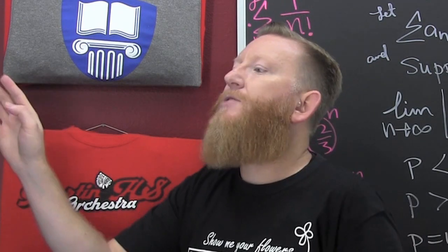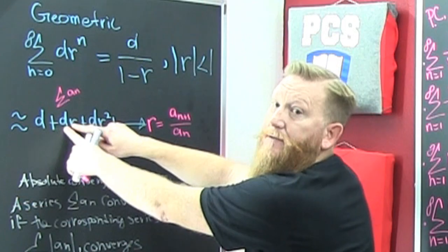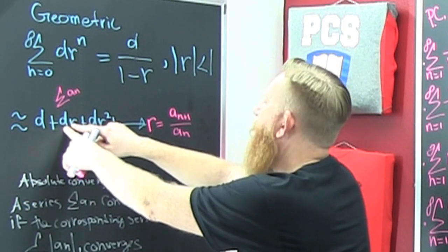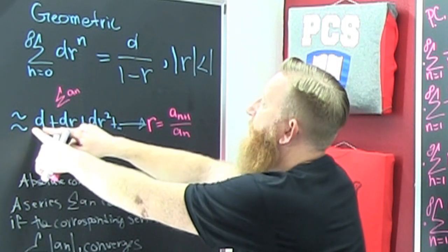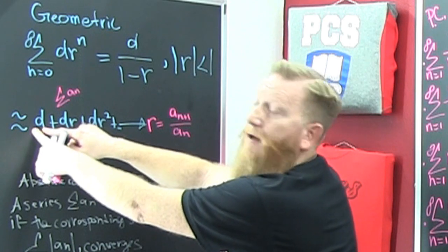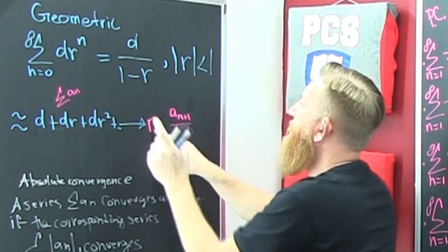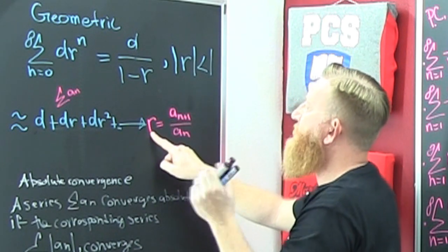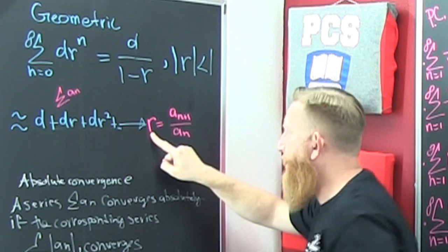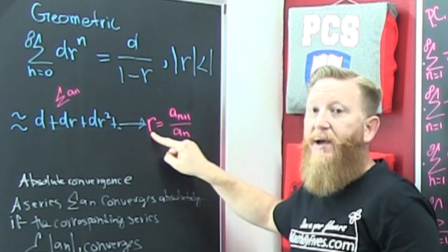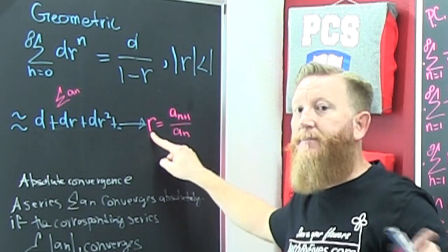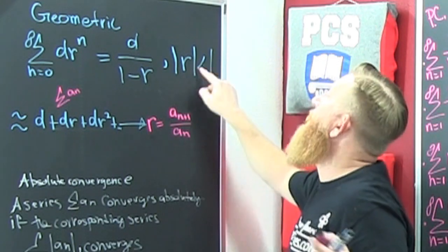Or you look at the term that you're at divided by the term before that. So I can take this and divide it by that, I can take any of those and divide it by the one before it and it's going to be the common ratio. So that's the ratio in common from term to term.